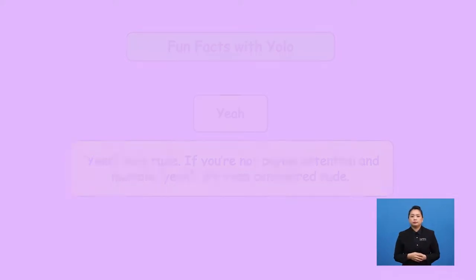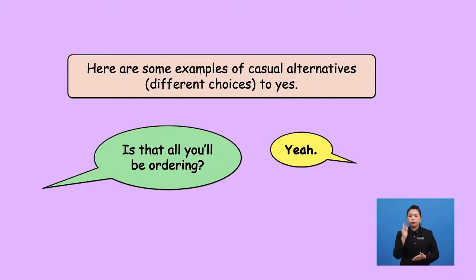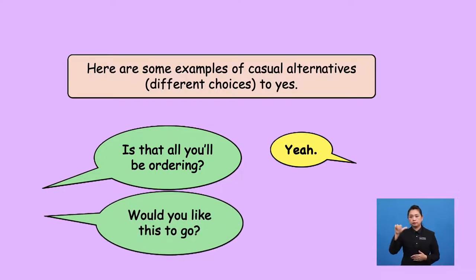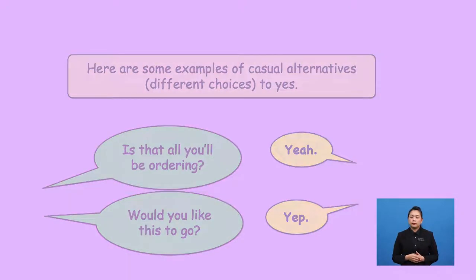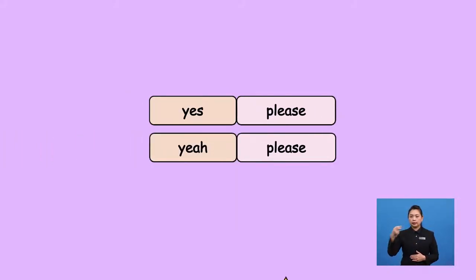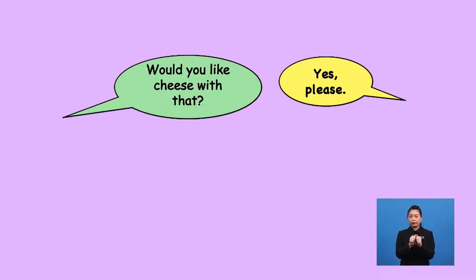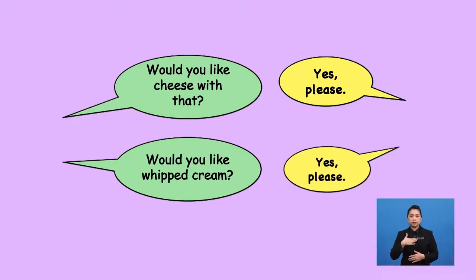That's correct. Here are some examples of casual alternative different choices to say yes. Is that all you'll be ordering? Yeah. Would you like this to go? Yeah. Another note is that when you do use yes, then to answer that question about adding anything, you want to say yes, please. However, yeah, please sounds a bit awkward. Would you like cheese with that? Yes, please. Would you like whipped cream? Yes, please.